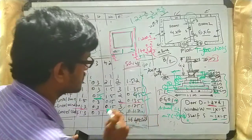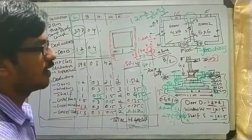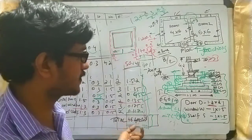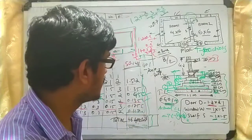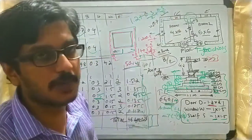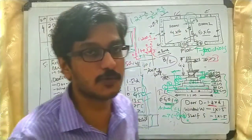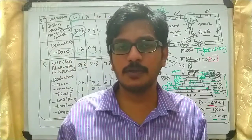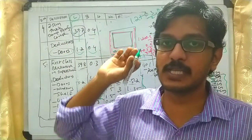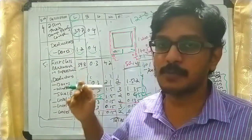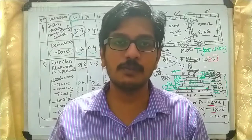After calculating all deductions for doors, windows, shelves, and lintels, these values are added up and subtracted from the total gross brickwork. The final quantity of brickwork in superstructure is 46.4085 cubic meters. The same procedure can be applied for any type of building with more rooms, doors, or windows. Note that damp proof course is measured in square meters while all other items are in cubic meters. I hope the lecture is clear — thank you.